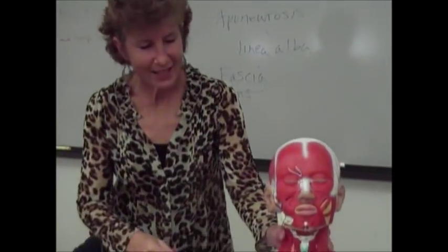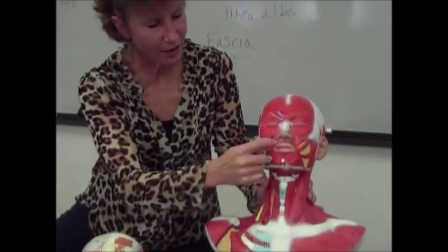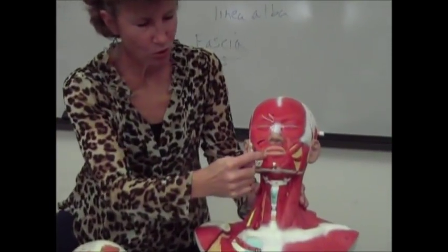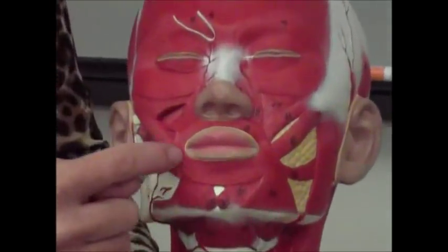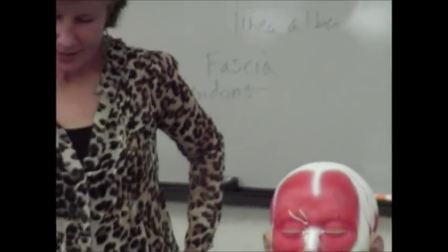Then you have the orbicularis oris — think oral cavity, oris. That runs around your mouth and helps you do the pucker action. So that's the one that makes you kiss.